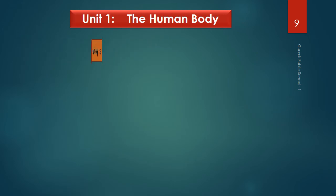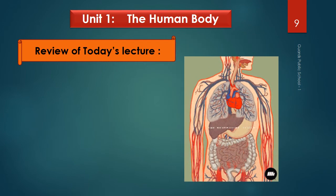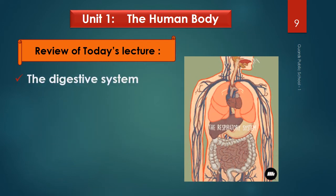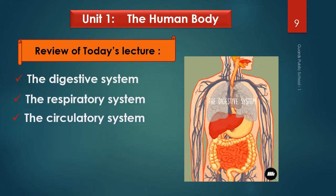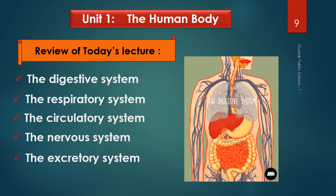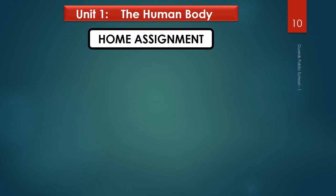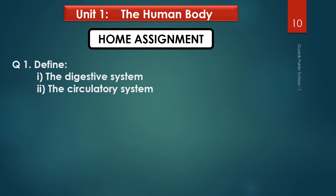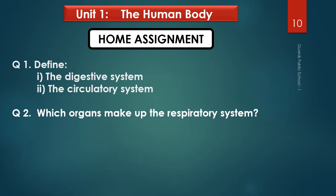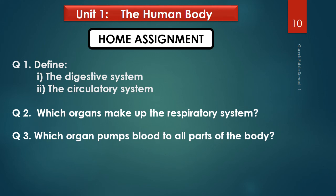Now it's review time. Today we have learned about the body systems: the digestive system, the respiratory system, the circulatory system, the nervous system, and the excretory system. After watching the video carefully, you have to complete the home assignment. Question 1: Define the digestive system and the circulatory system. Question 2: Which organs make up the respiratory system? Question 3: Which organ pumps blood to all parts of the body? Also do the exercises in the book on pages 7 and 8.